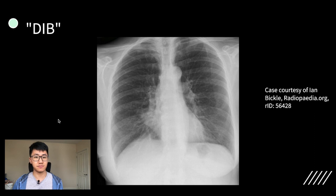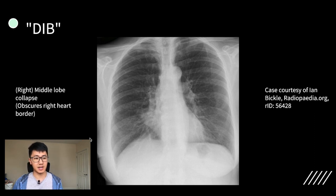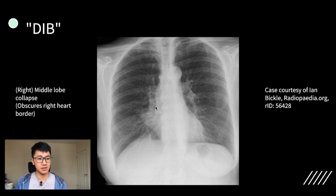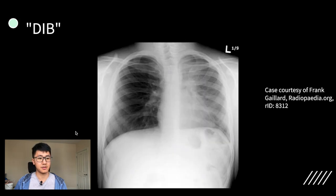Next case — so this is middle lobe collapse. It's quite a tricky one to spot, but again you have got this almost triangular opacity. Because the middle lobe is adjacent to the right heart border, as we saw with the consolidation case, it will obscure that right heart border, so it's not as crisp as on the other side.